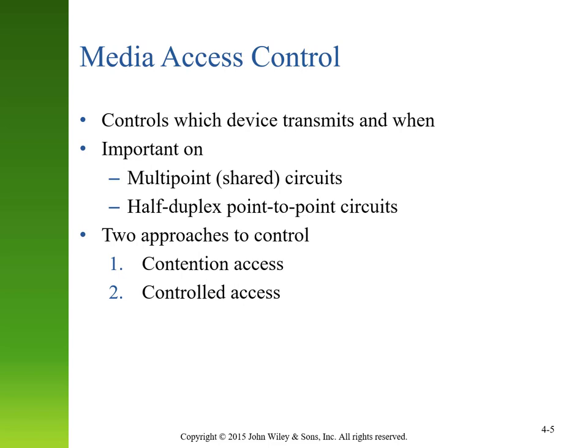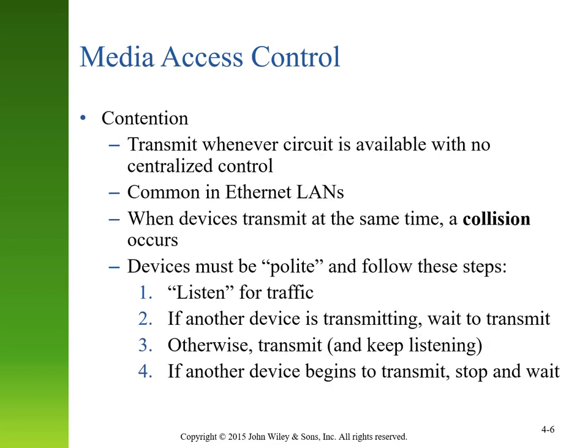There have been two approaches to media access control: contention access and controlled access. Contention access allows devices on a network to transmit on a circuit when there is no other communication happening. There's no centralized control — devices have to listen for traffic, and when they don't hear anything, they can transmit. If they do hear something, they wait until there's silence before broadcasting.